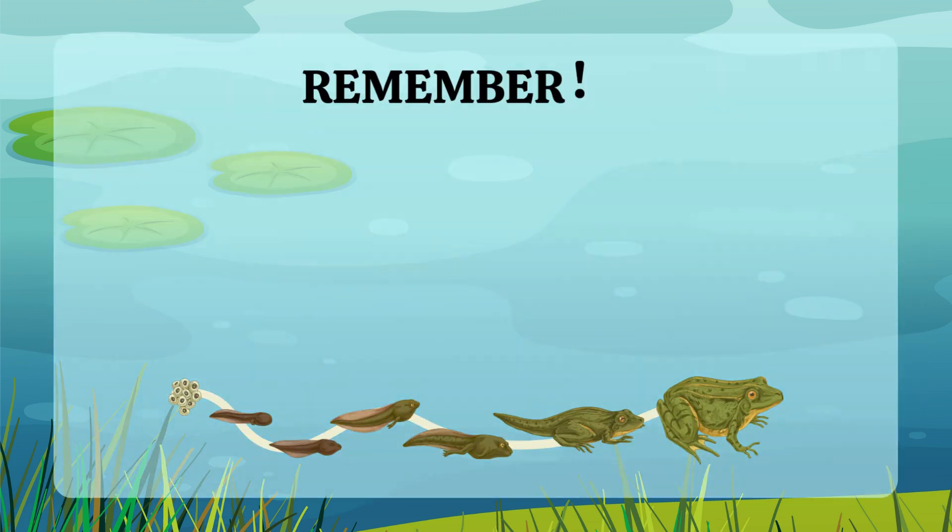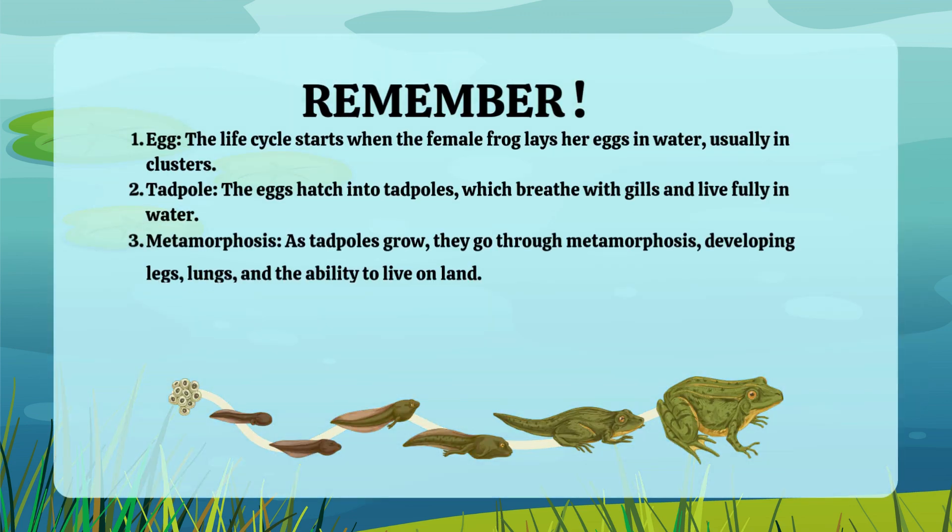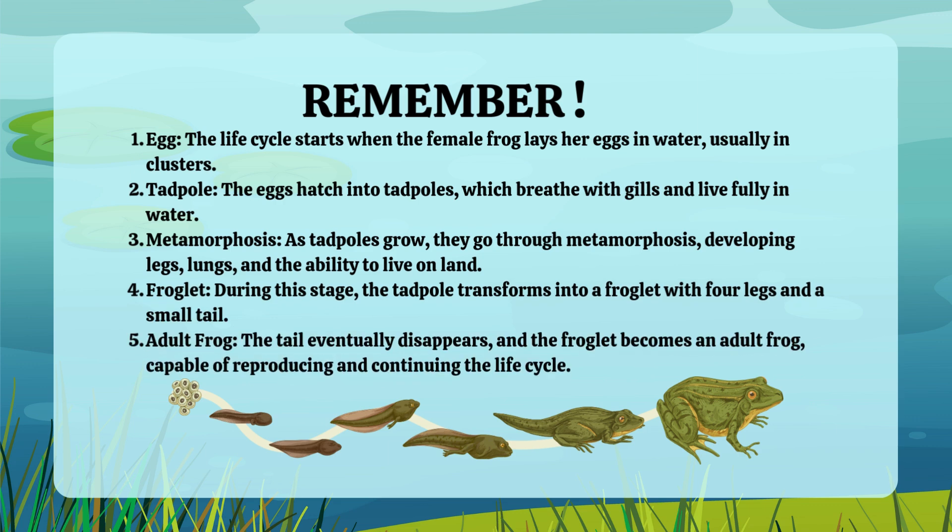To recap, the life cycle starts with the female frog laying her eggs in water, usually in clusters. The eggs hatch into tadpoles, which breathe with gills and live fully in water. As tadpoles grow, they undergo metamorphosis, developing legs, lungs, and the ability to live on land.